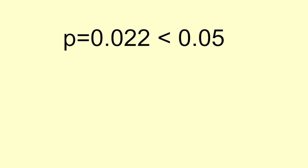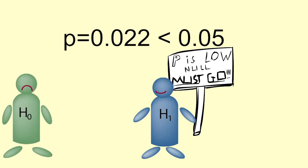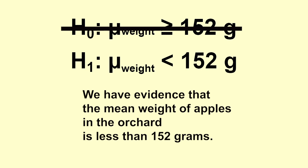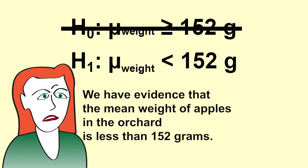The p-value is 0.022. This is less than the alpha value of 0.05, so we reject the null hypothesis. Our conclusion is that we have evidence that the mean weight of apples in the orchard, the population, is less than 152 grams.